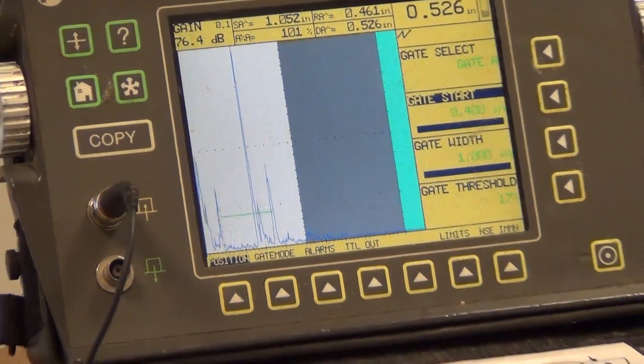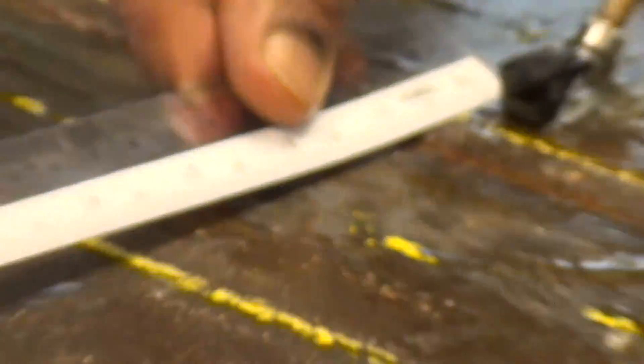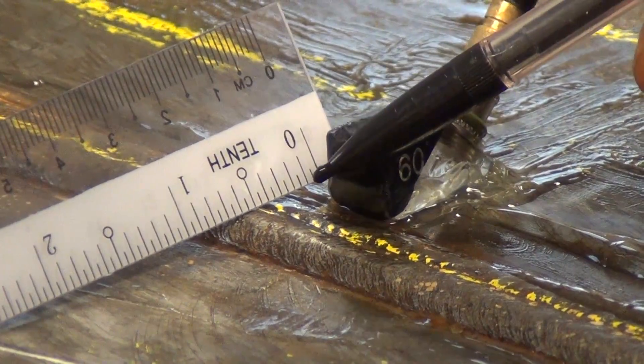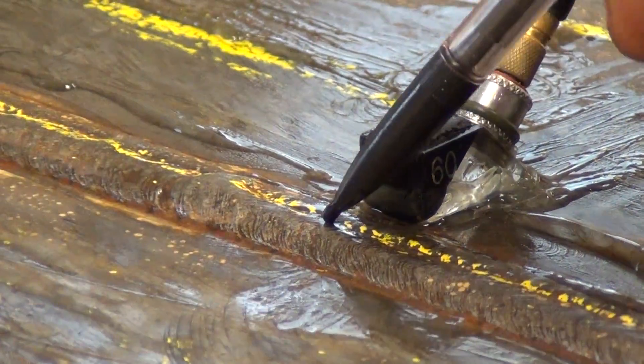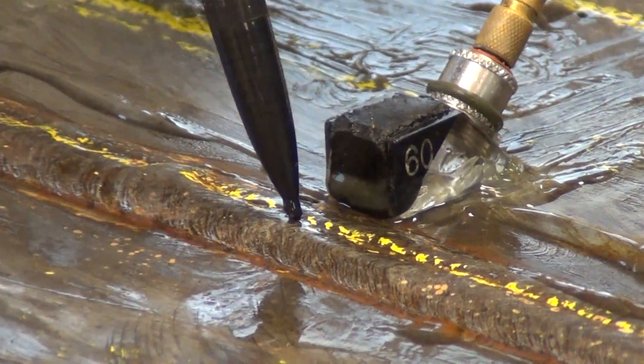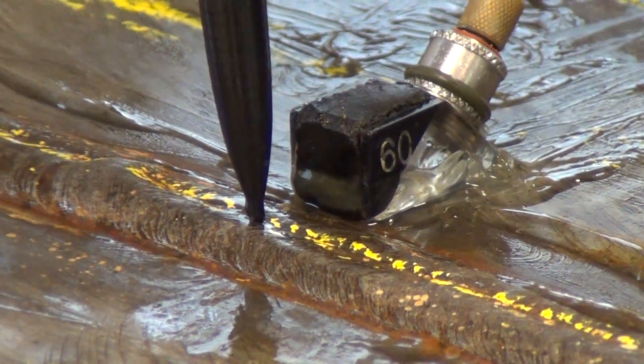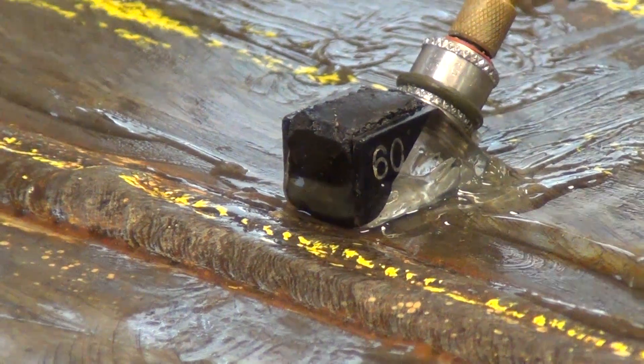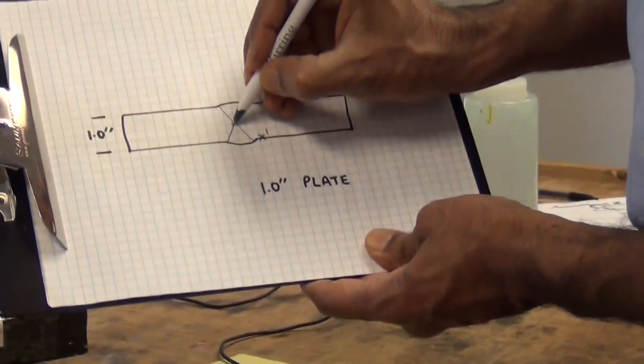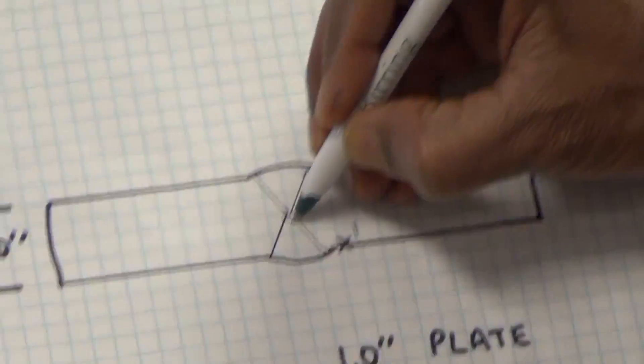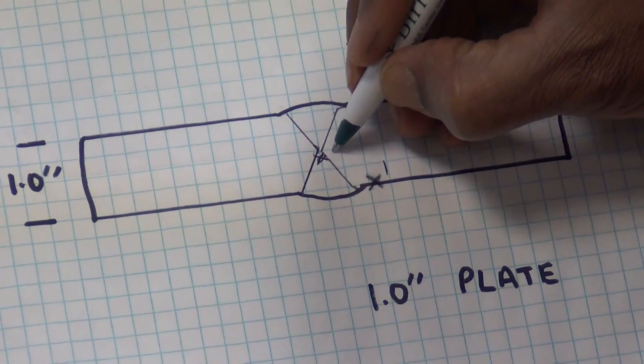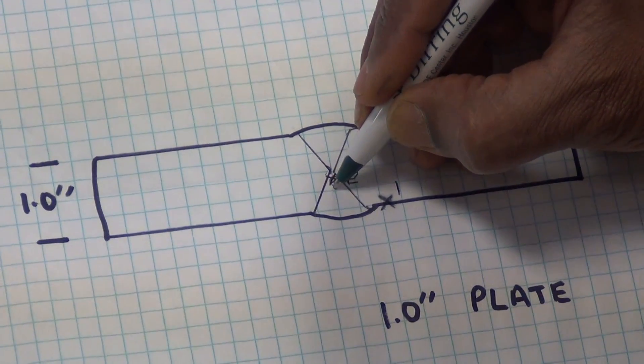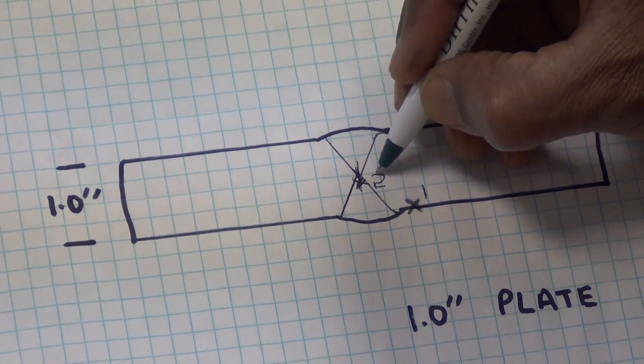I'll go back. Zoom in on the probe. I'll go 461, 0.461 from the front of the probe, which places me right there at the center of the weld. And from there, I have to go down 0.526, which is basically the middle of the weld, and that would put me at a location which is right there. So this is indication number 2. Most likely, this indication is the centerline crack because it's in the center of the weld.